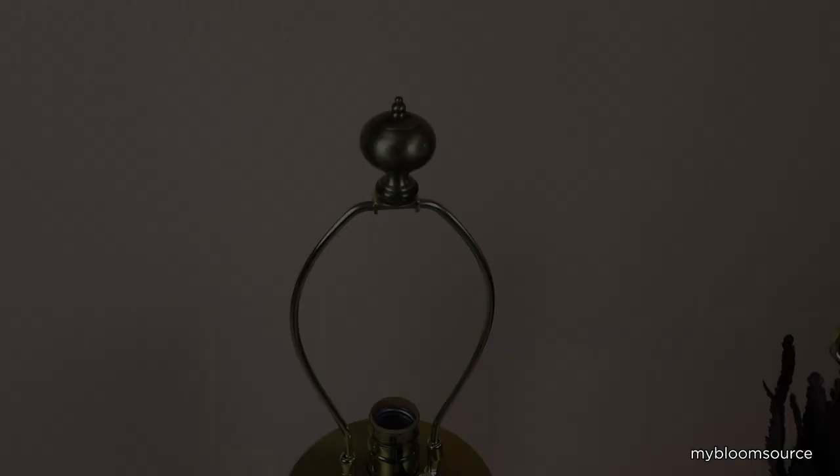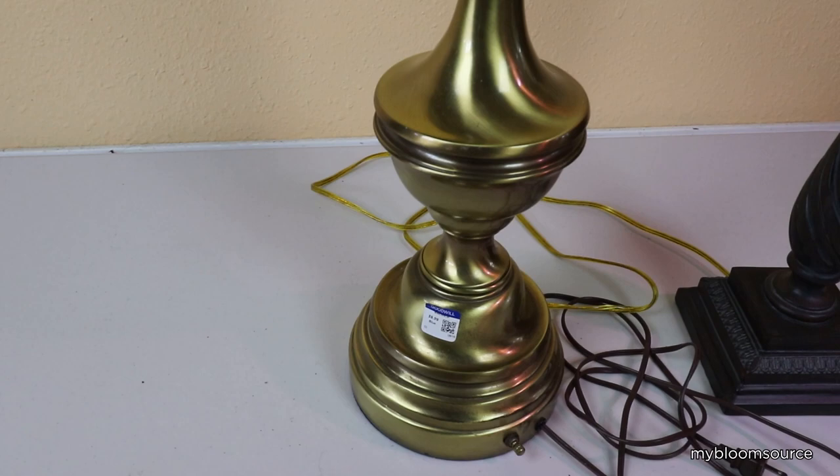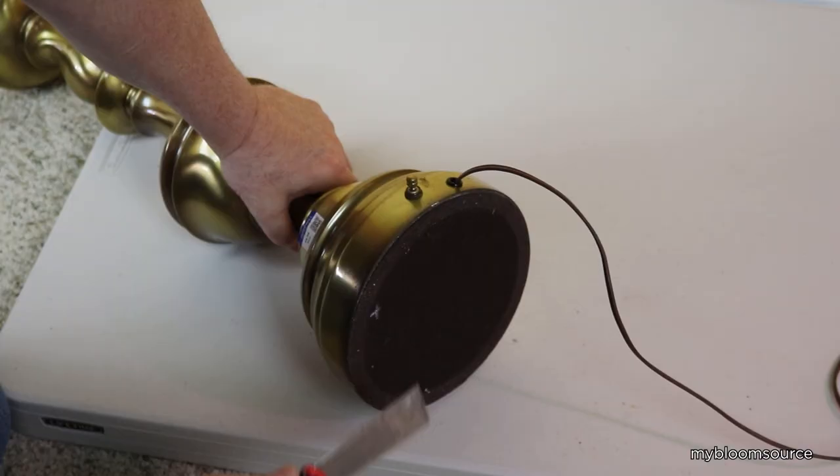Our first example will be the conversion of the gold lamp. Before you begin, make sure that the lamp is not plugged in. We start by disassembling the lamp. Remove the bottom cover taking care not to damage it as we might reuse this piece later.